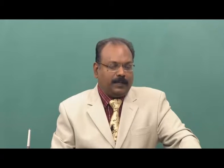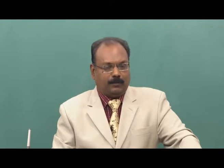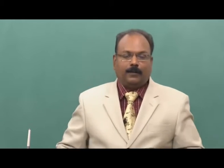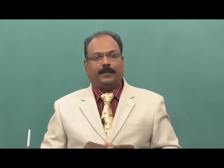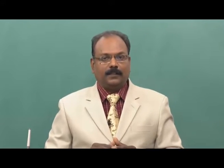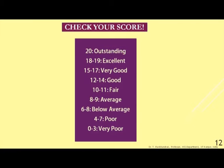Now check your answers and see where you stand. If you scored 20 out of 20, you are outstanding. 18 or 19 is excellent. Between 15 and 17 is very good. Between 12 and 14 is good. 10 to 11 is fair, 8 to 9 is average, 6 to 8 is below average, 4 to 7 is poor, and 0 to 3 is very poor.